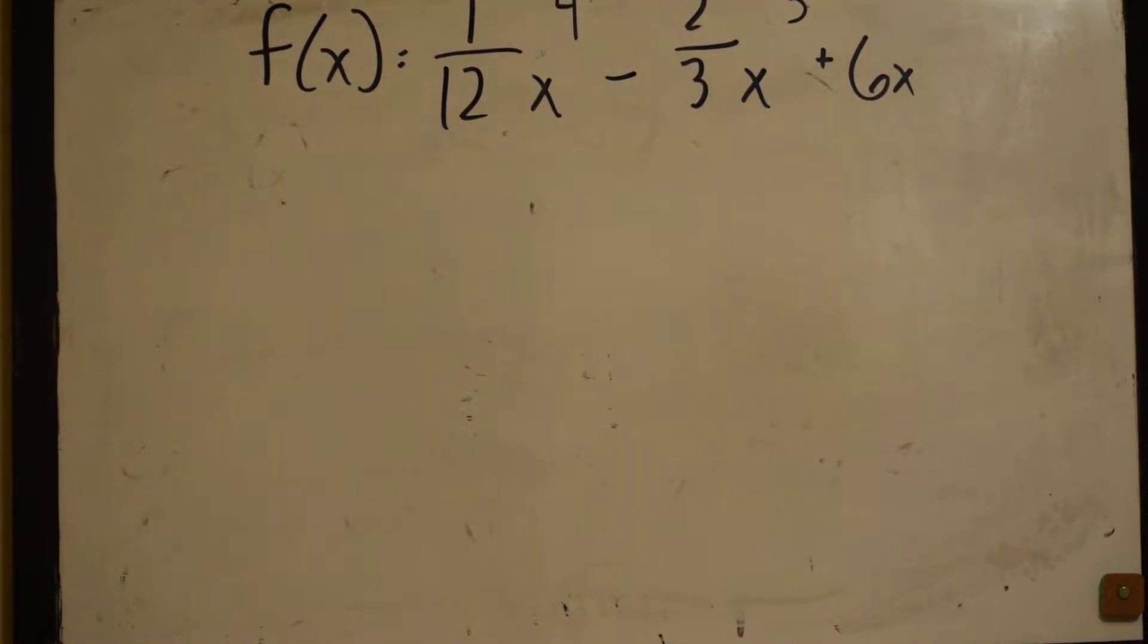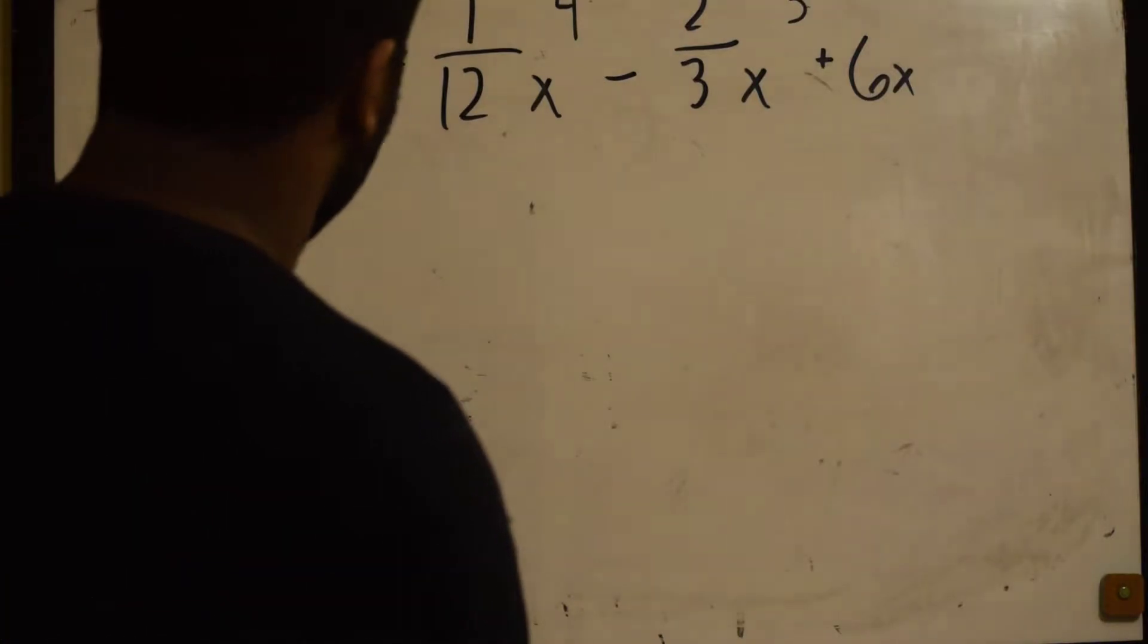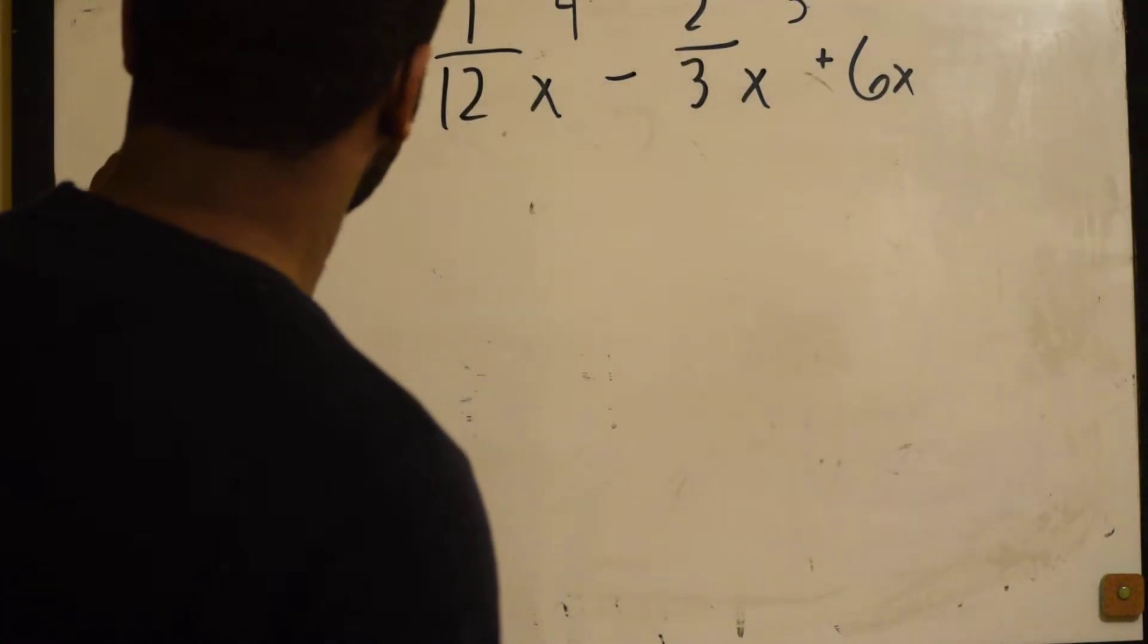Okay, so we have f of x is equal to 1/12 x to the 4th minus 2/3 x cubed plus 6x. So first we need to find the first derivative.